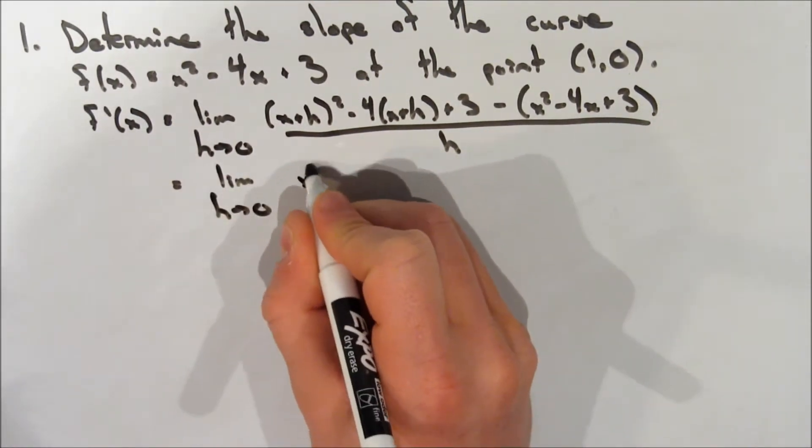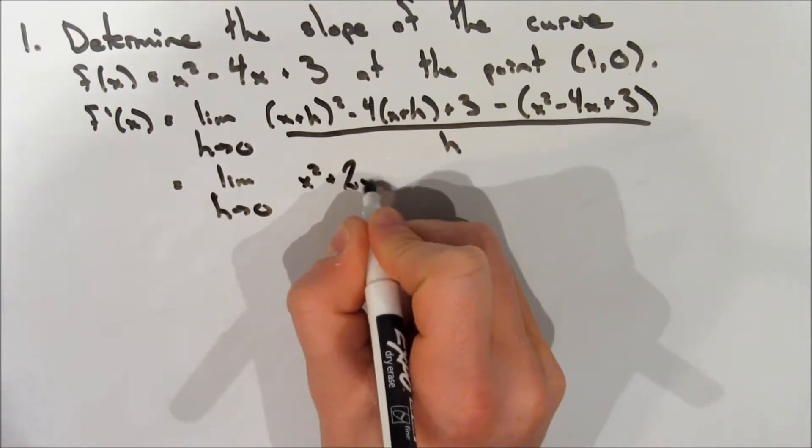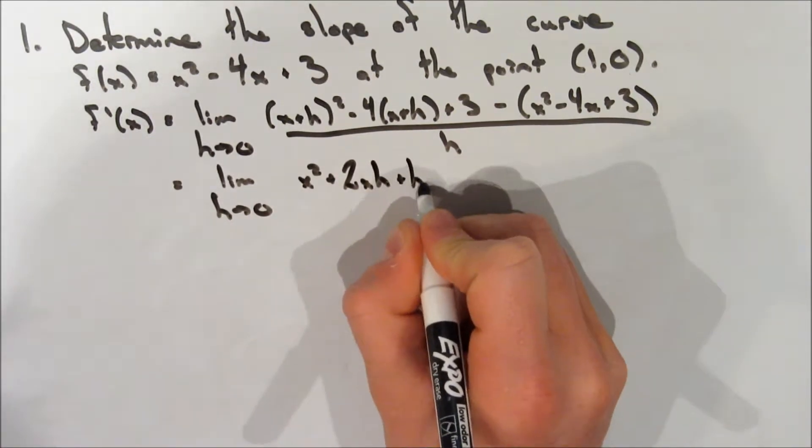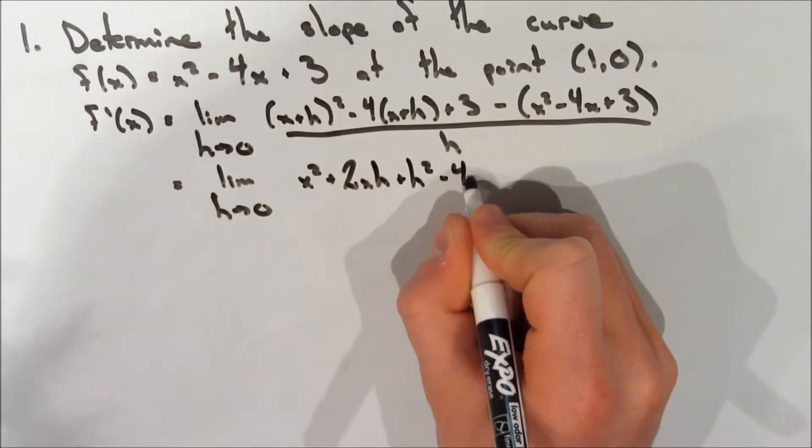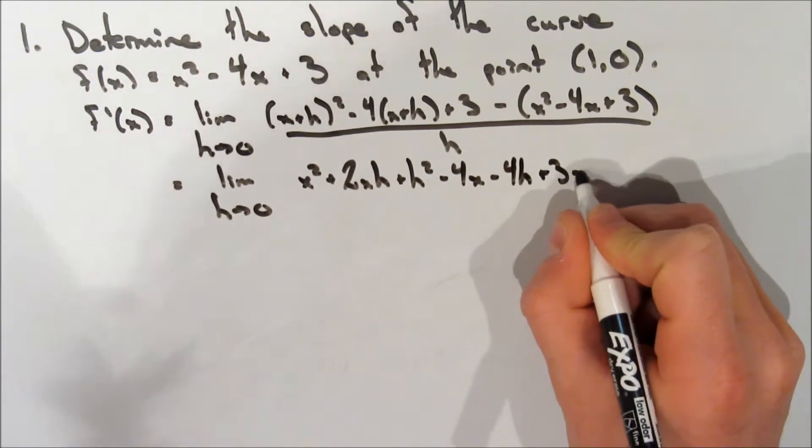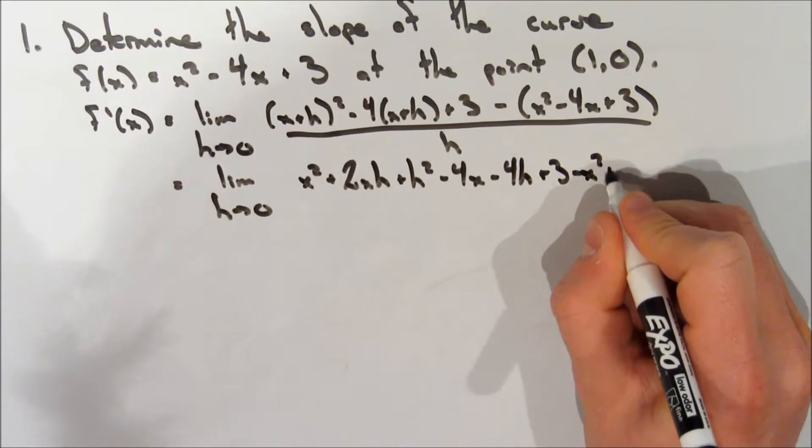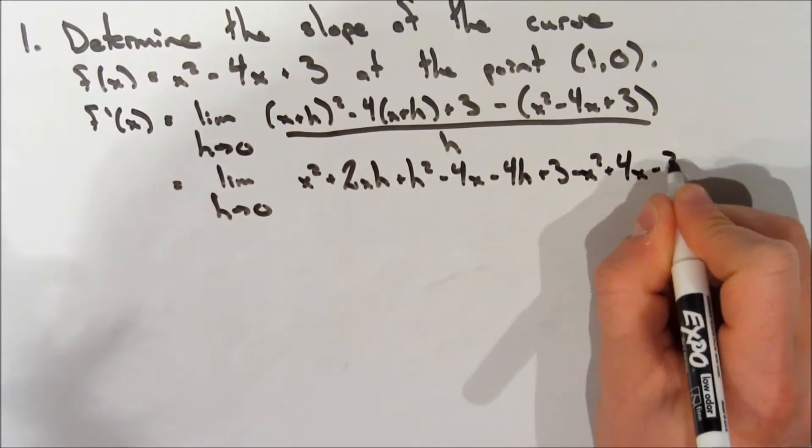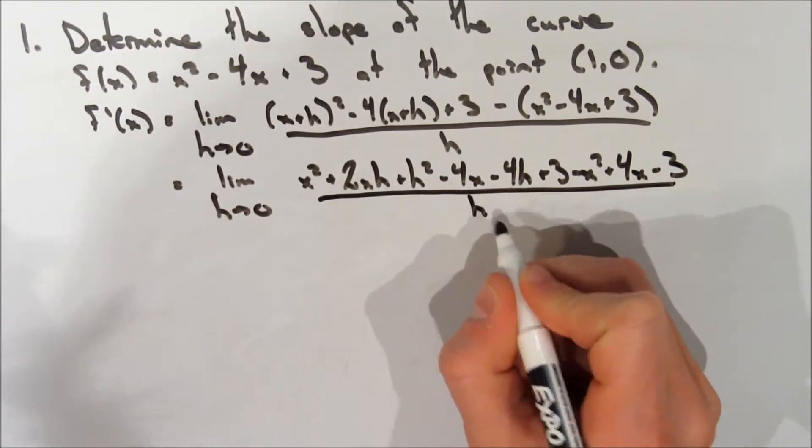So on the next line, we're still taking the limit, and let's expand these brackets. So x squared plus 2xh plus h squared minus 4x minus 4h plus 3, minus x squared plus 4x minus 3. And all of this is over h.